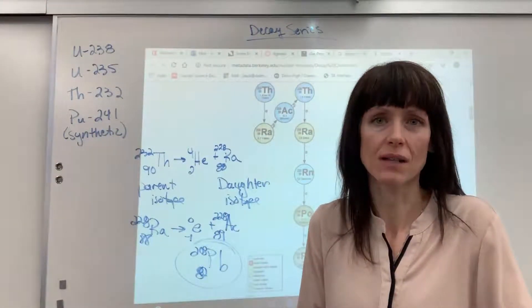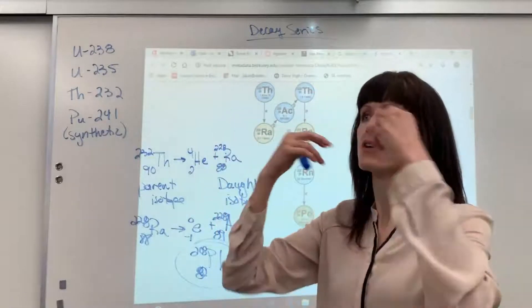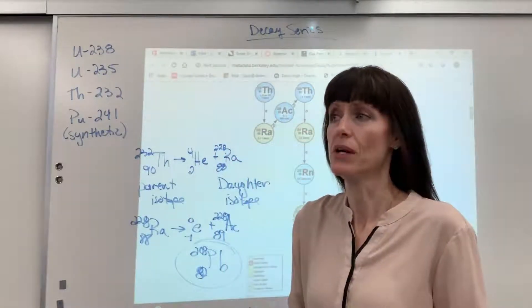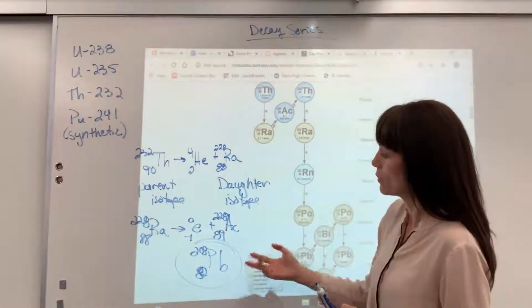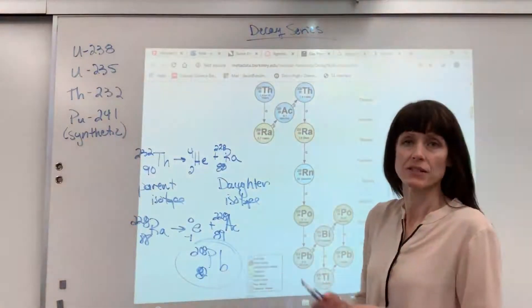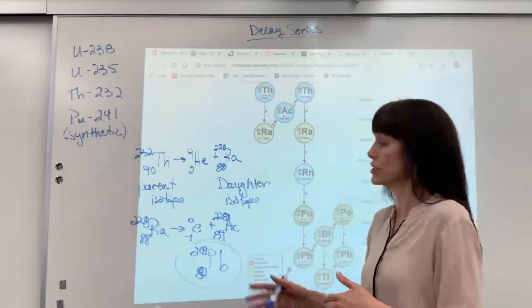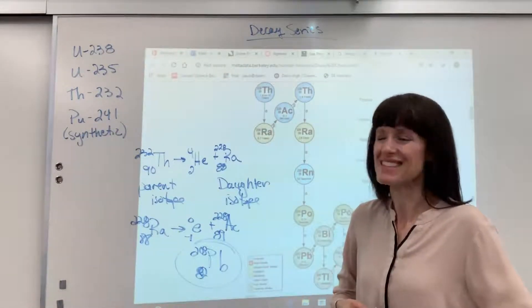Lead is what's called a magic number. We have a handful of those on the periodic table that are isotopes that are extremely stable. Another reason why we can use lead as a guard against gamma radiation is because it's so stable and super dense.